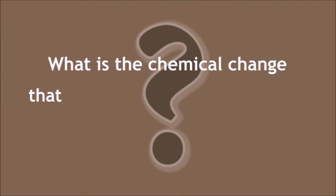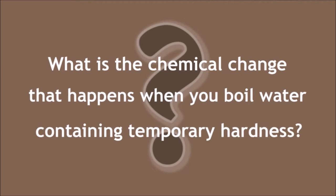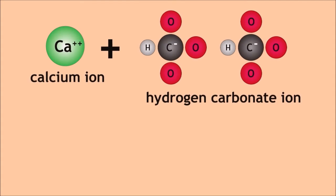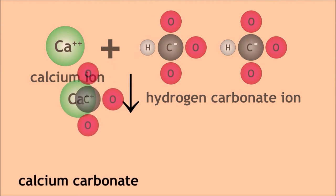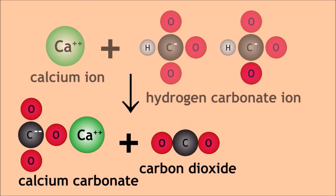So here's a question: what is the chemical change that happens when you boil water containing temporary hardness — that is, hardness caused by calcium hydrogen carbonate? Pause the video whilst you think of your answer. Well, the answer is that the calcium hydrogen carbonate splits up into calcium carbonate, which is the limescale, carbon dioxide, and water.